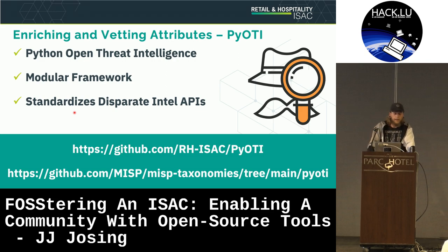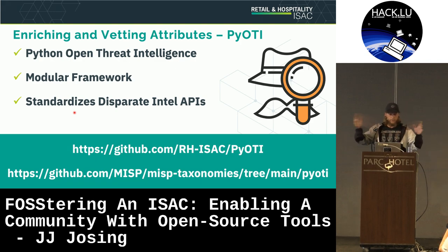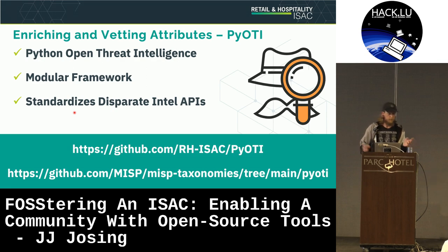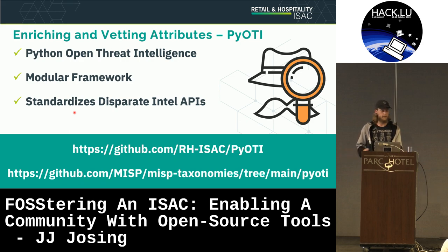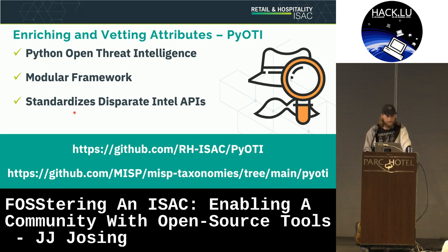Moving on to enriching and vetting the attributes — we use Pyote, the Python Open Threat Intelligence Library. It's an API framework built very modularly to standardize all the disparate intel APIs out there. When I joined the RHISAC, this process was pre-MISP and took hours a day — I'd spend half my day going through hundreds of indicators, adding them to a spreadsheet, and uploading them to different services. It was not great, and there had to be a better way.